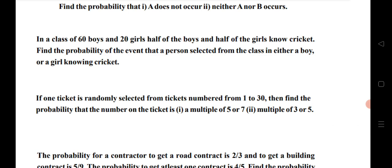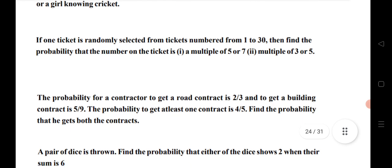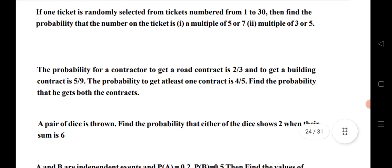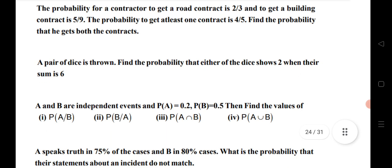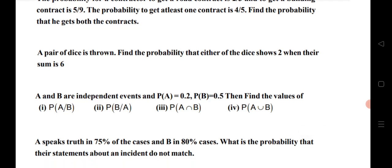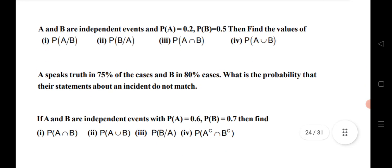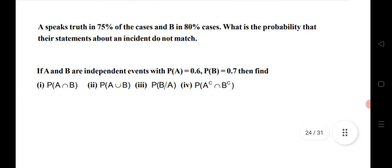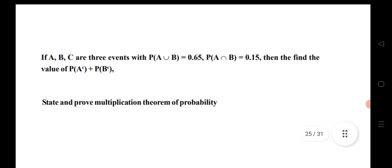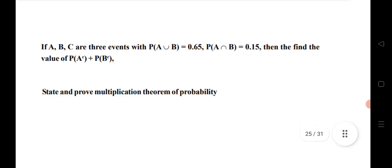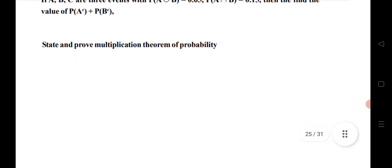When one ticket is drawn — next question; the probability for a contractor — very important; a pair of dice — also important; A and B are independent events — find P(A/B), P(B/A), P(A∩B), P(A∪B); A speaks truth — very important question; A and B are independent — very important questions. If A, B, C are three events, find the value of P(A doesn't occur) + P(B doesn't occur). Last question: state and prove the multiplication theorem of probability.